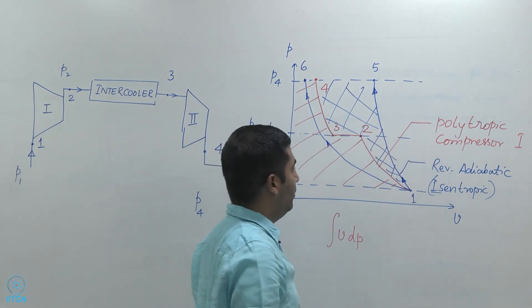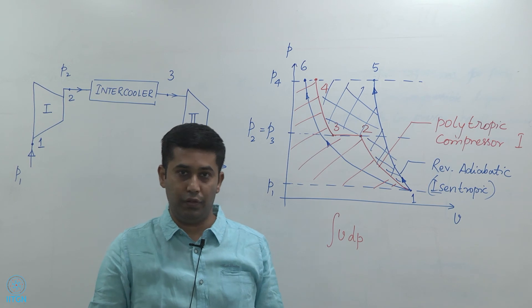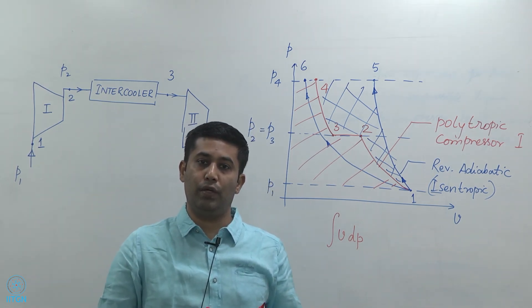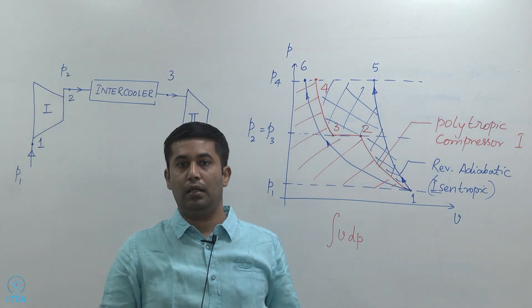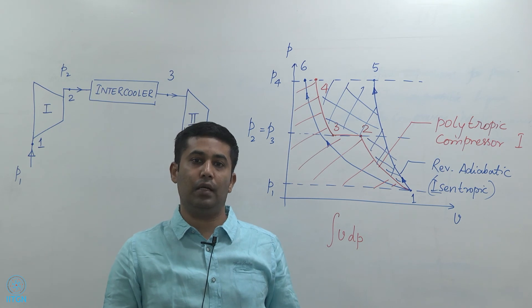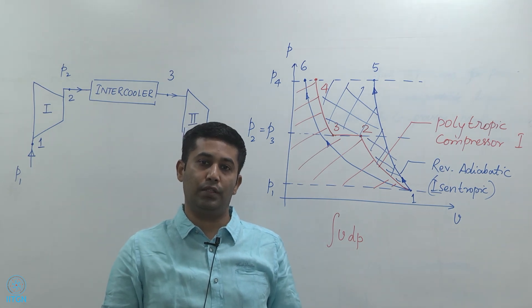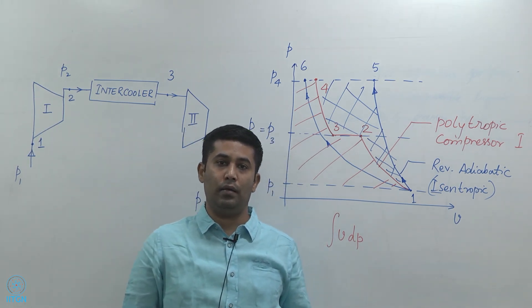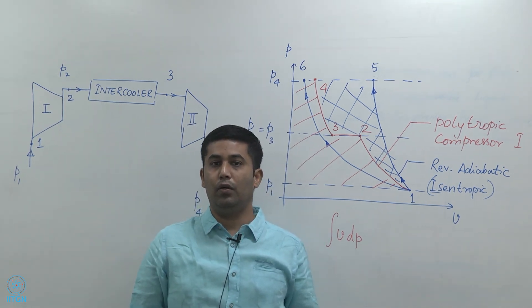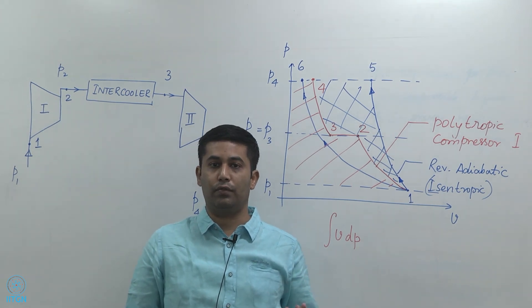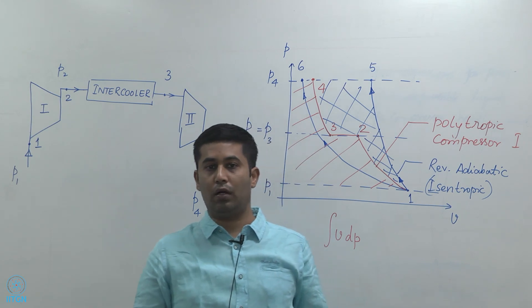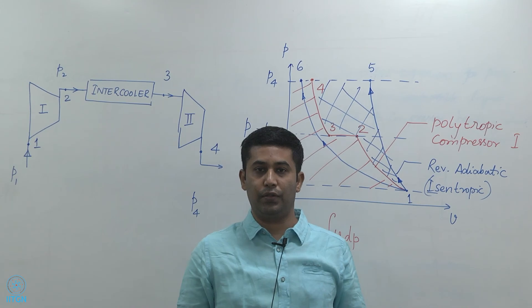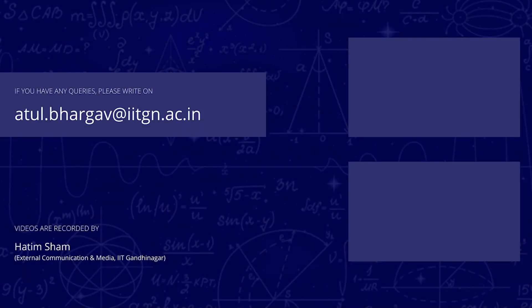For energy efficiency purposes, compressors operating at very high pressures — such as 25 bar or anything more than 15 bar — typically employ more than one stage of compression. In the next video we will look at what happens with real irreversible devices, and how to handle irreversibilities in compressors, turbines, and pumps.